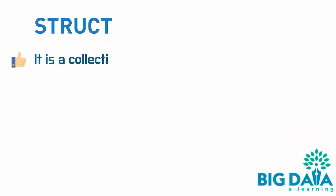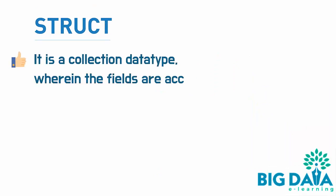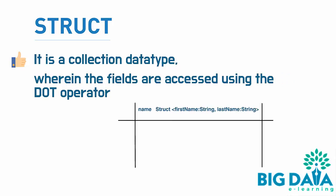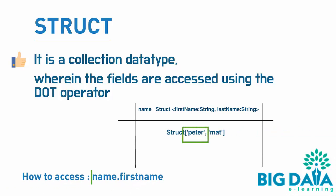Struct is a collection data type wherein the fields are accessed using the dot operator. For example, if a column name is defined with a struct data type with the values Peter and Matt, then name.firstname will return the first name.